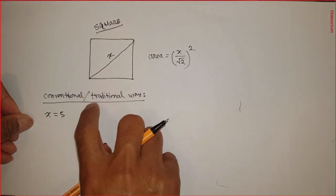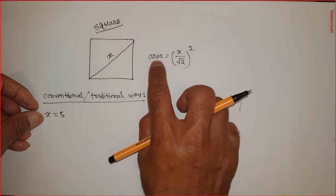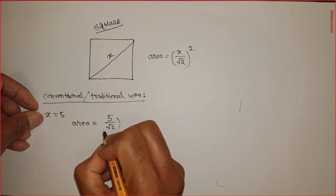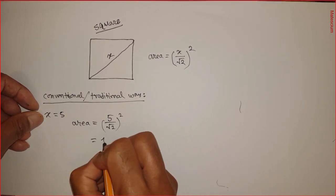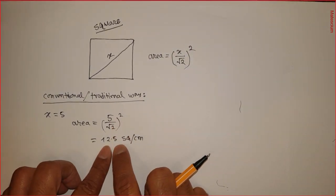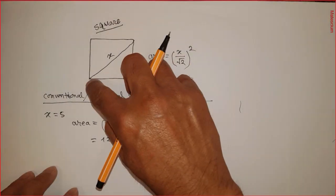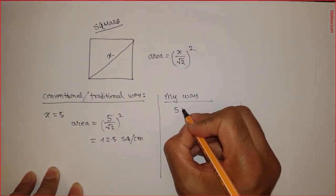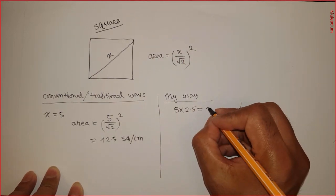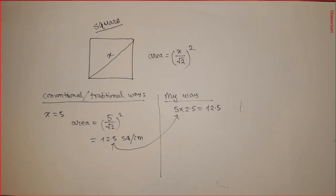But I have a very simple trick that takes only 5 seconds. Let's say the diagonal length x equals 5. According to the conventional way: area equals 5 over square root 2, squared, which gives 12.5 square centimeters — but that takes at least a minute with a calculator. My trick: if you know the diagonal is 5, just multiply it by its half. Half of 5 is 2.5, and 5 times 2.5 equals 12.5. That's the answer instantly.